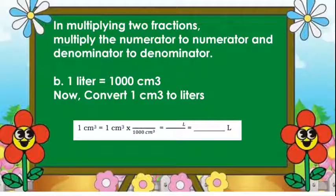1 liter is equal to 1,000 cubic centimeter. Now, convert 1 cubic centimeter to liters. We have 1 cubic centimeter is equal to 1 cubic centimeter times 1 over 1,000 cubic centimeter is equal to 1 over 1,000 divided by 1,000 is equal to 0.001 liters.